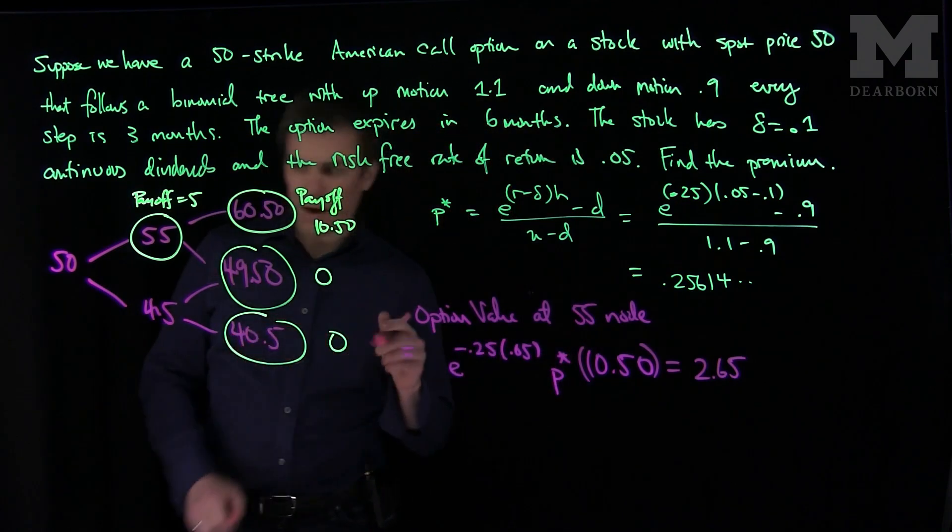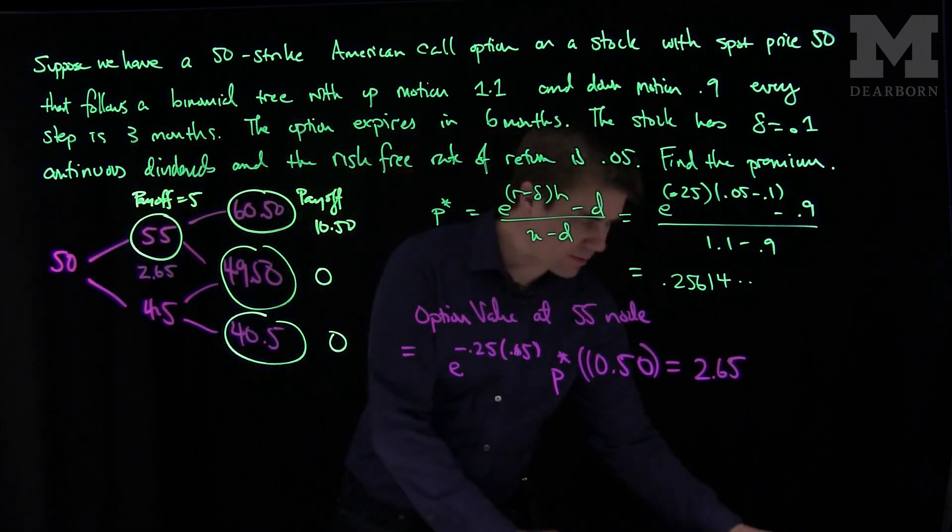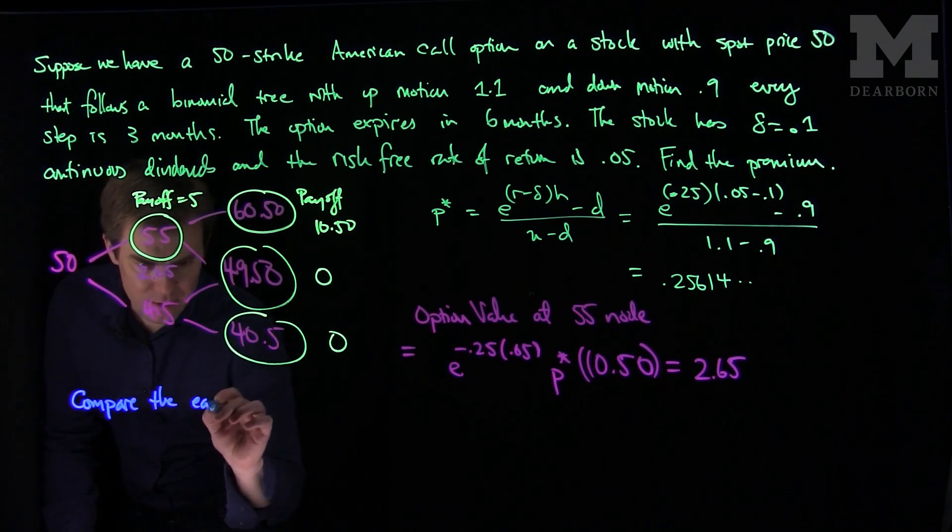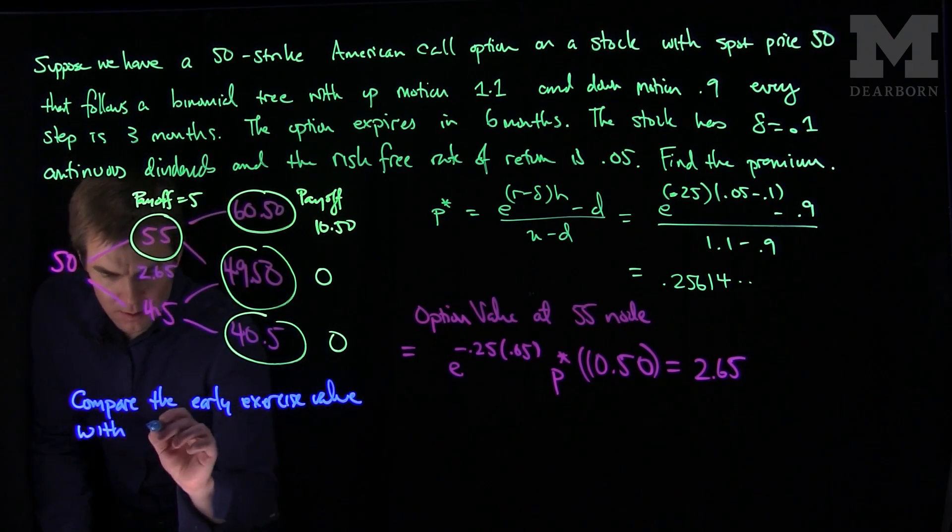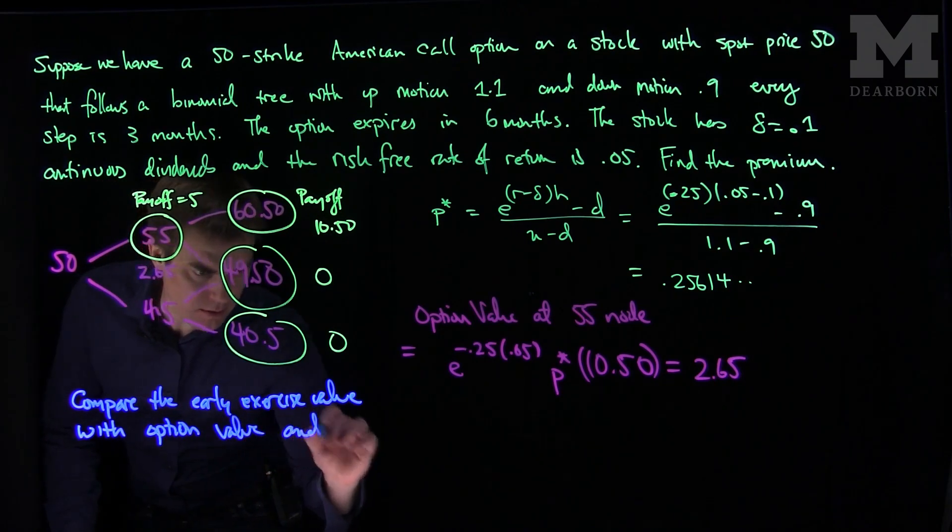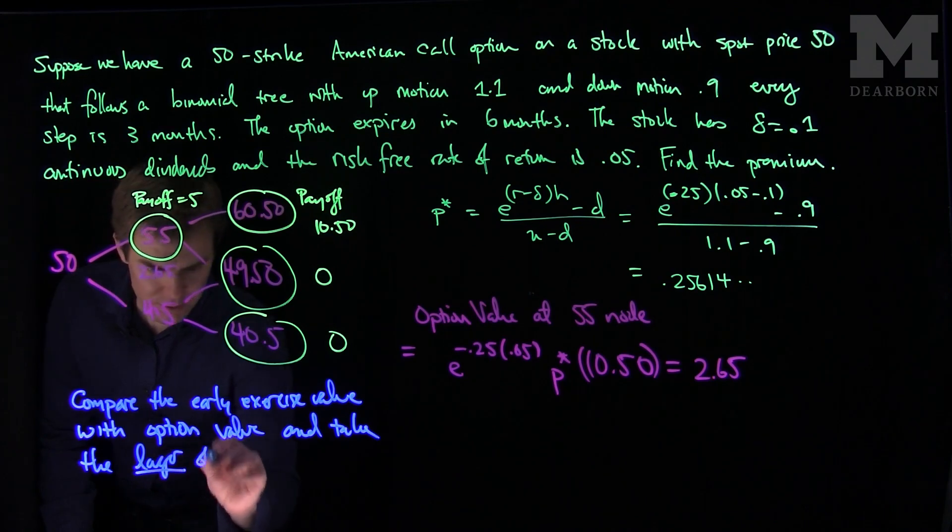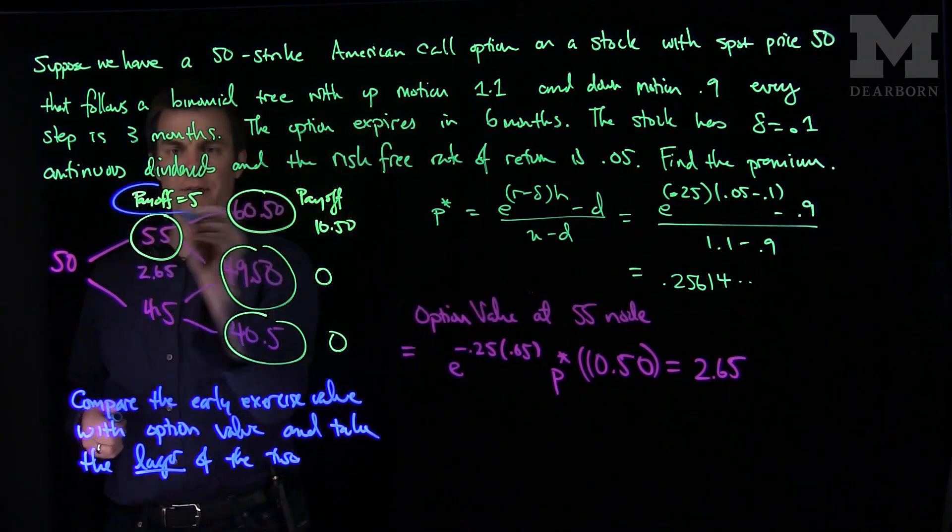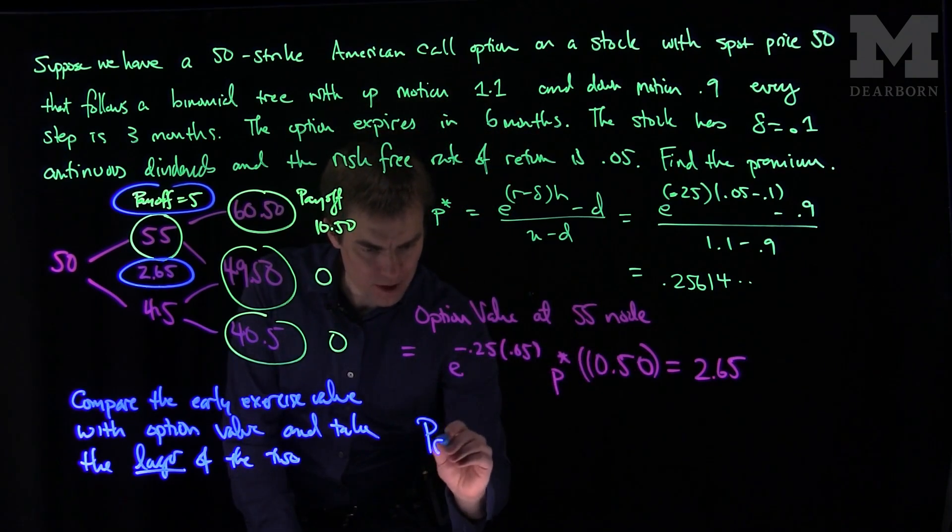The option value is $2.65. Now what we do is, this is important, we compare the early exercise value with the option value and we take the larger of the two. In this case, we see that the larger of the payoff and the early exercise is 5, so we update this.